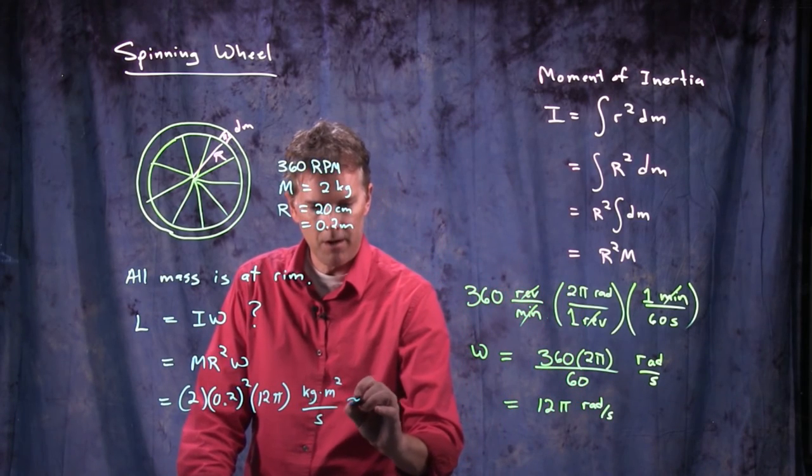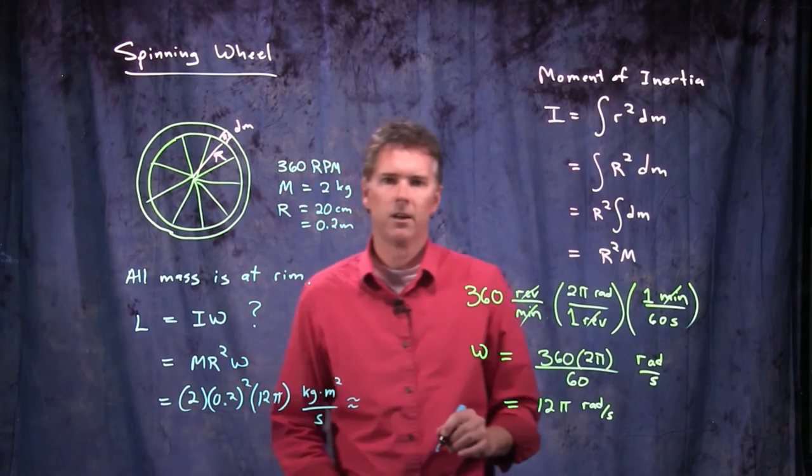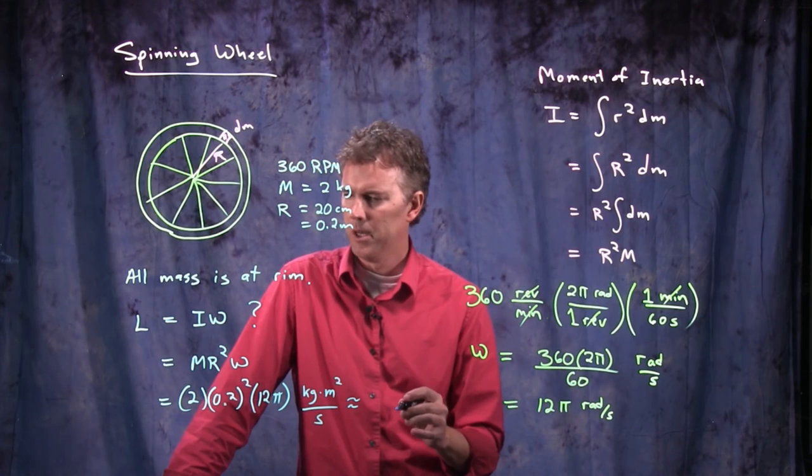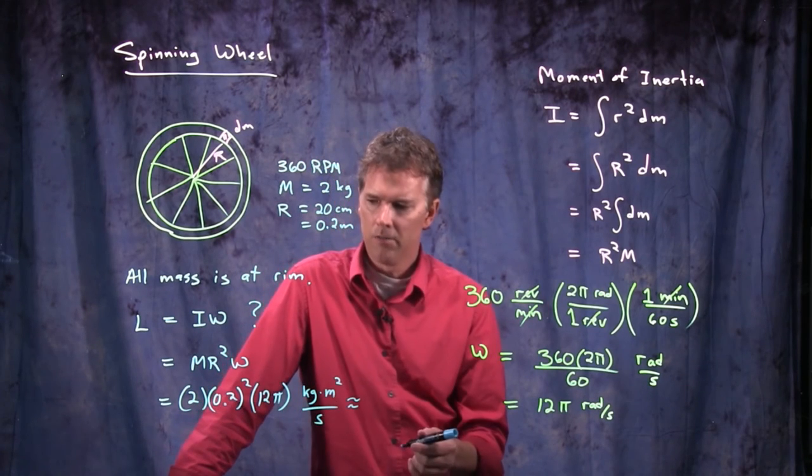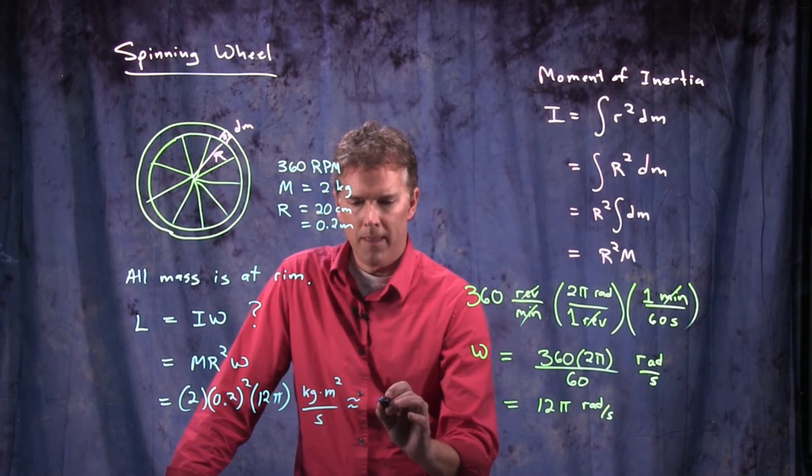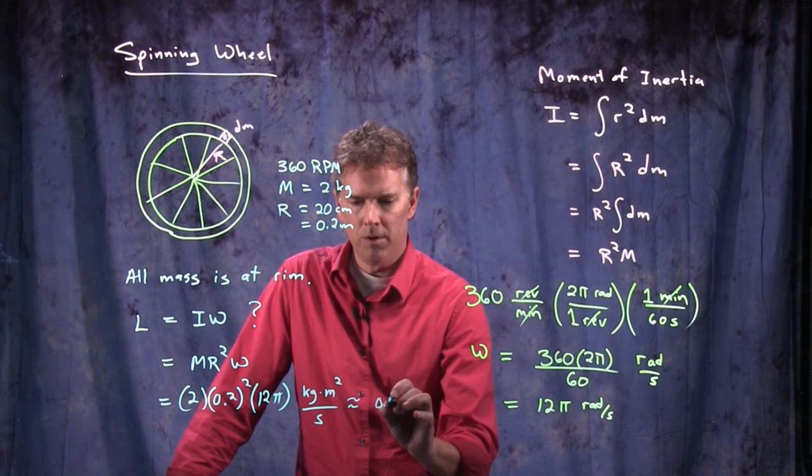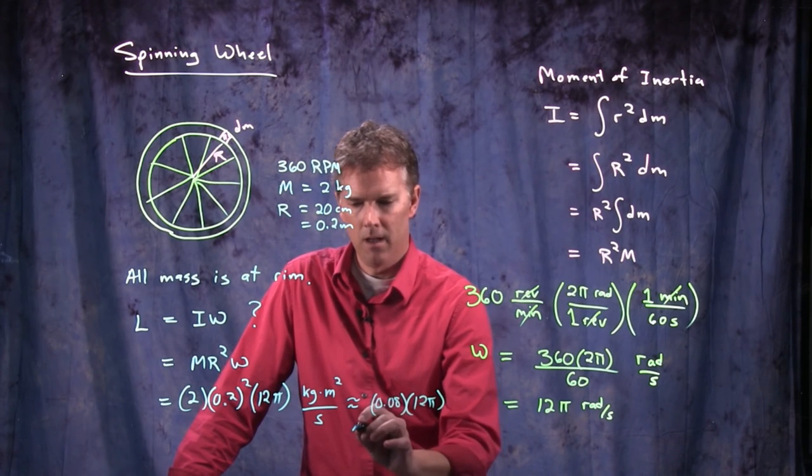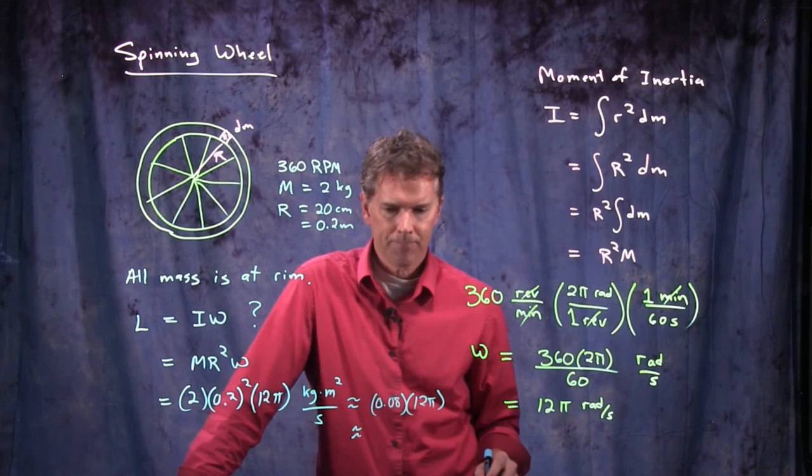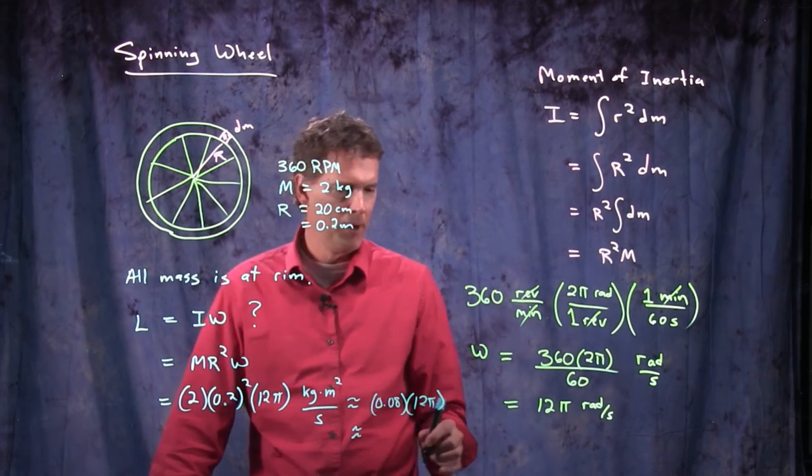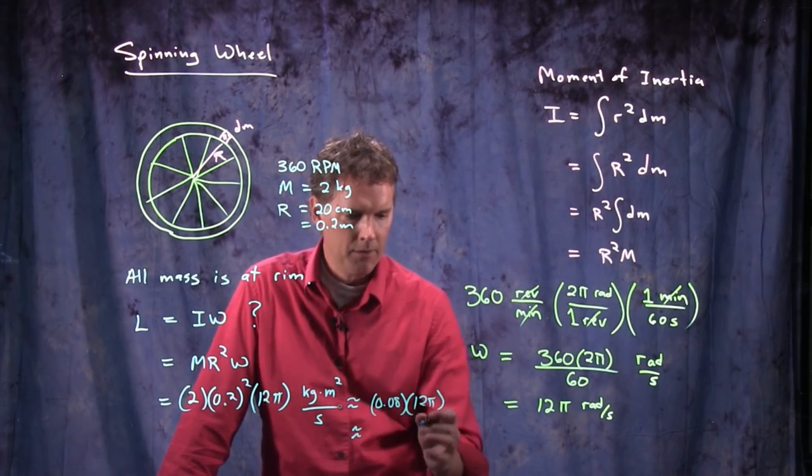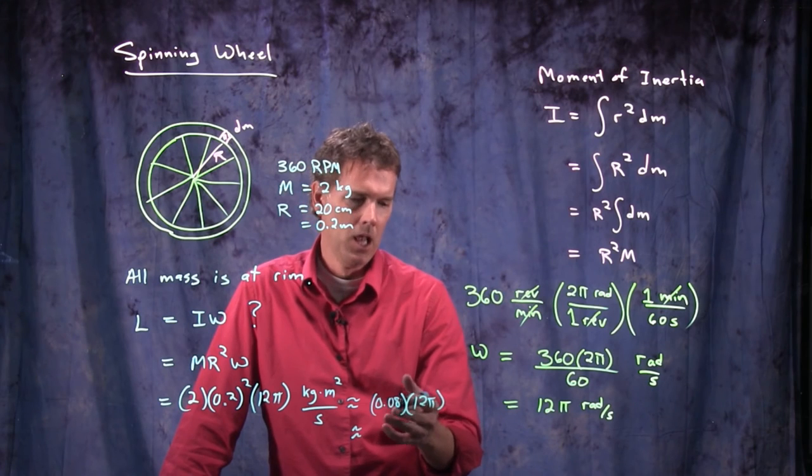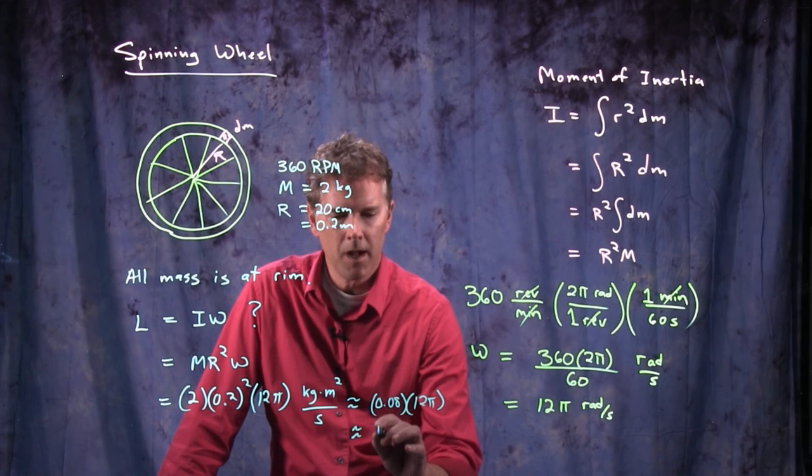Let me approximate the answer here and you guys can punch it into your calculator. Eric, you want to punch it into your calculator and tell me what you get exactly and I'll approximate it here. So 0.2 squared is going to be 0.04. If I multiply that by 2, I get 0.08. And then I'm going to multiply that by 12 pi. 0.08 is really close to 0.1. And so if I do 0.1 on this, I'm going to get 1.2 pi.